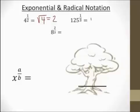125 to the 1 third power. That's like taking the cube root of 125. And that's going to give us 5. So if you type that in your calculator, you get 5.